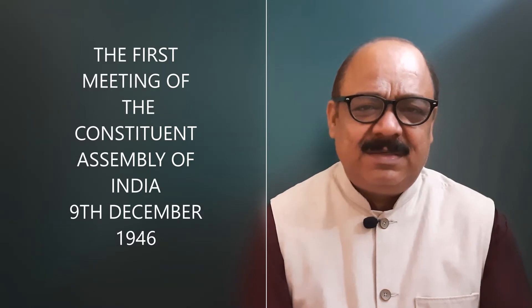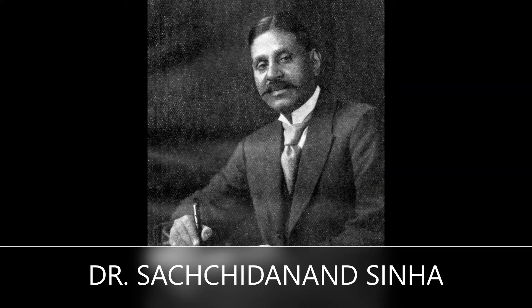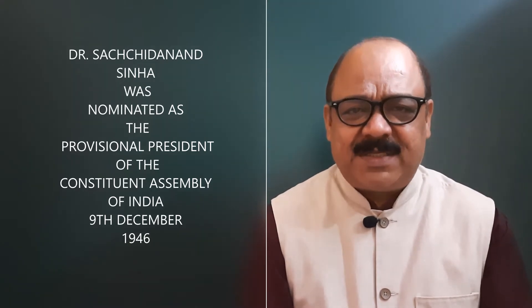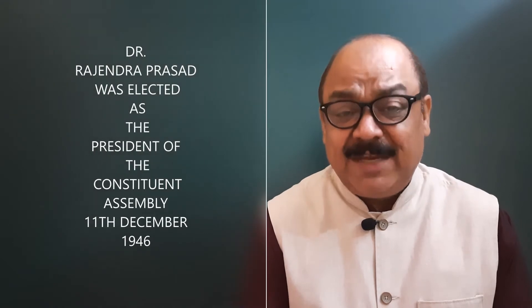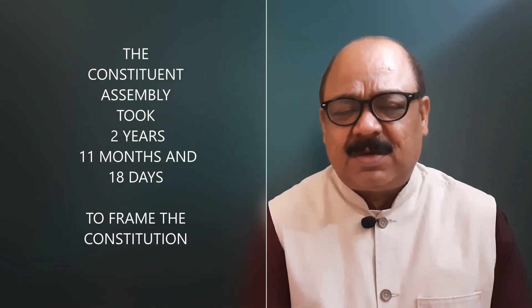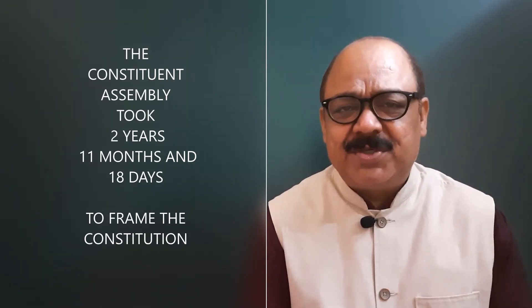On 9th December 1946, the Constituent Assembly of India met for the first time. Dr. Satchidanand Sinha was nominated as the Provisional President of the Constituent Assembly. On 11th December 1946, Dr. Rajendra Prasad was elected as the President of the Constituent Assembly. The Constituent Assembly took 2 years, 11 months and 18 days to frame the Constitution of India.